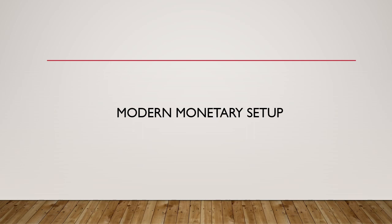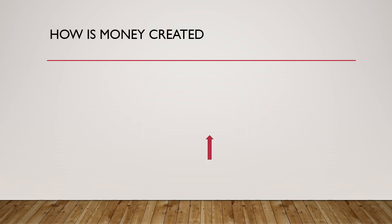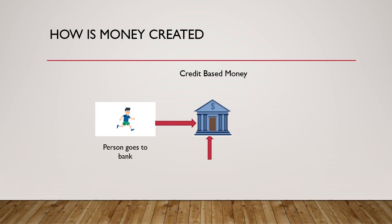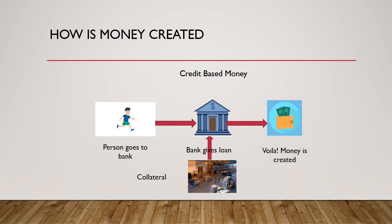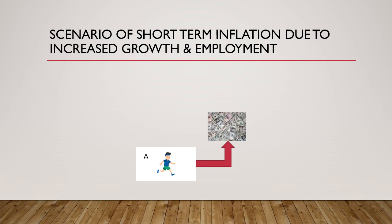Before we start, we'll have a brief context of the modern monetary setup — how money is created and grows in the economy. A person goes to the bank to get a loan. The bank takes a collateral from the person, which can be an asset or inventory, and in lieu of that the bank grants a loan. Money is created in the economy because, as the name suggests in this system, credit is money.